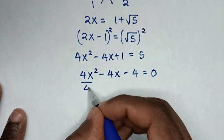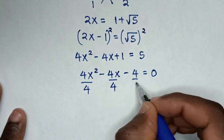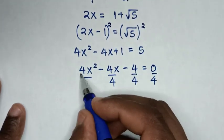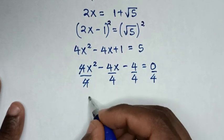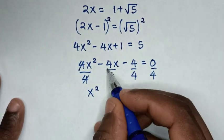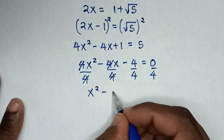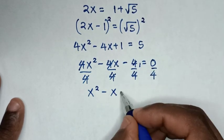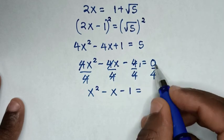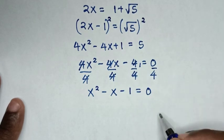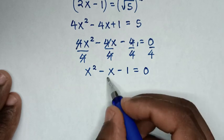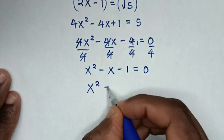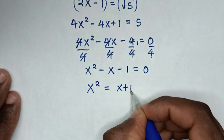Then 4 is common, so we'll divide by 4 on both sides. This 4 and this 4 will cancel, then it will be x squared, then negative x, then 4 divided by 4 is 1, so it will be negative 1 is equal to 0. Then we take negative x and negative 1 to the right side, so it will be x squared is equal to x plus 1.